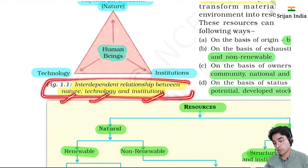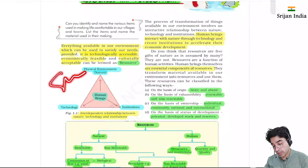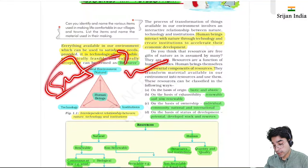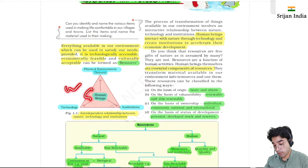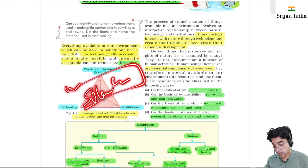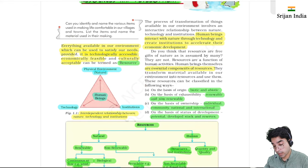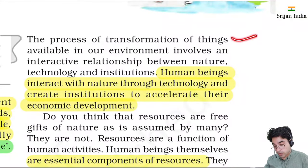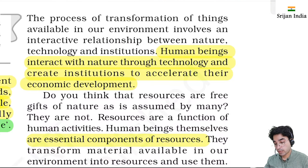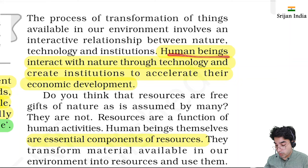The sun has a lot of energy, but we cannot fully harness it because we do not have sufficient technology. So the sun, although it is a very large reserve, cannot become a very large resource fully, although we have tried to harness solar energy considerably. The process of transformation of things available in our environment involves an interactive relationship between nature, technology, and institutions.